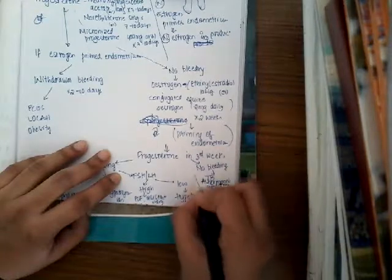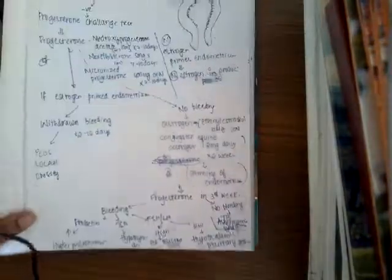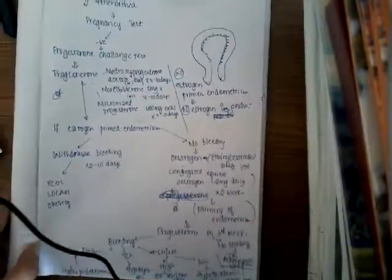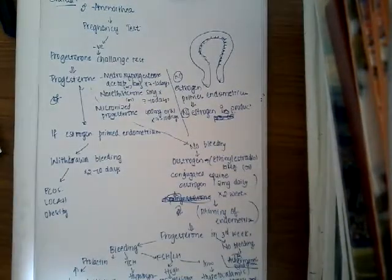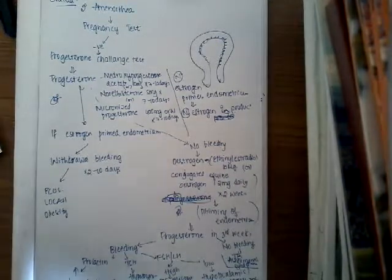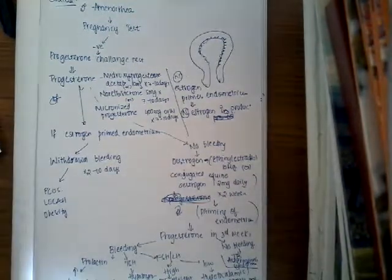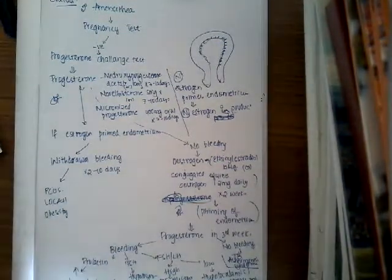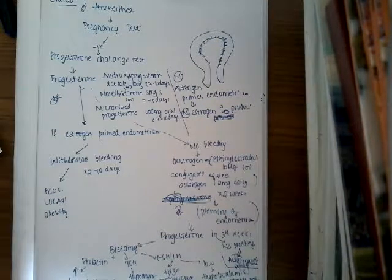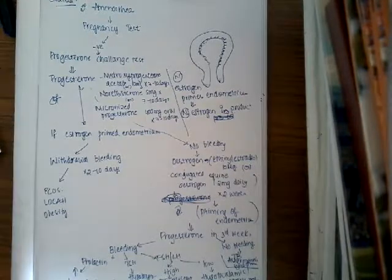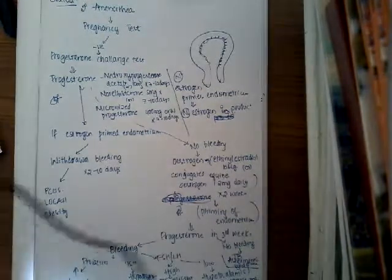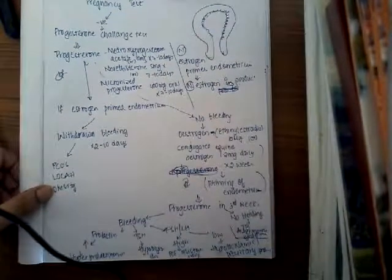This is about the evaluation of secondary amenorrhea. The treatment is simple: treat the cause. Find the cause and based on the cause, treat accordingly. Thank you for watching this lecture. If you have any doubts, please comment in the comment section.